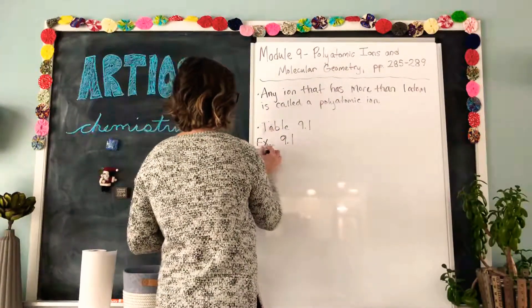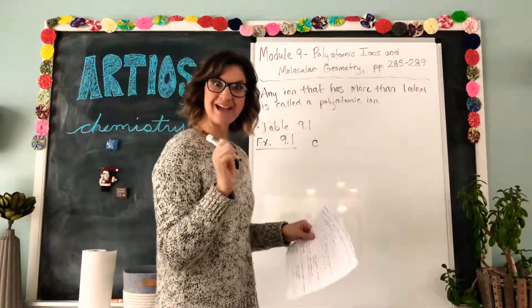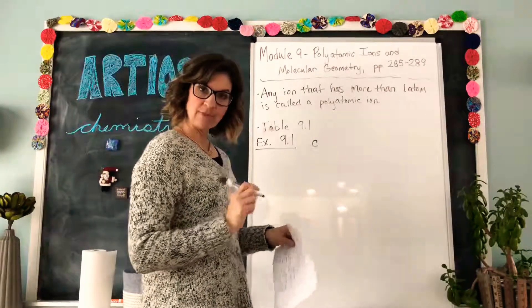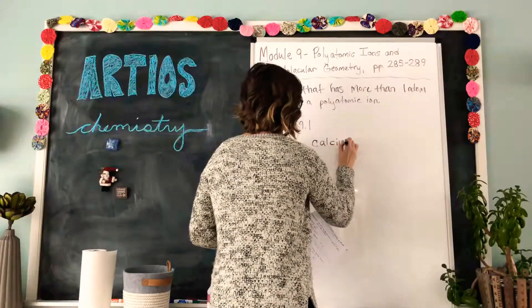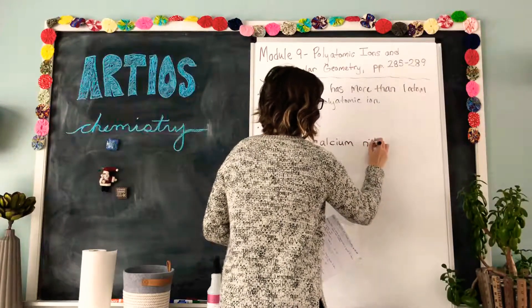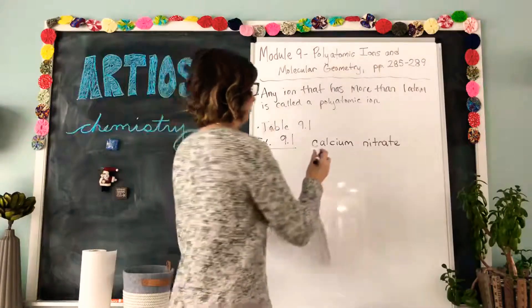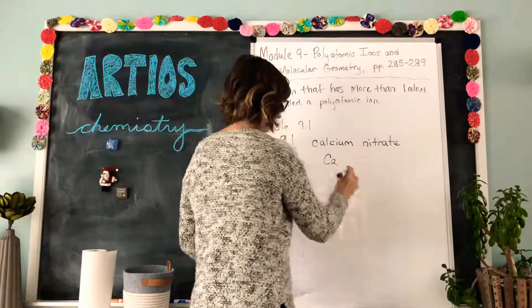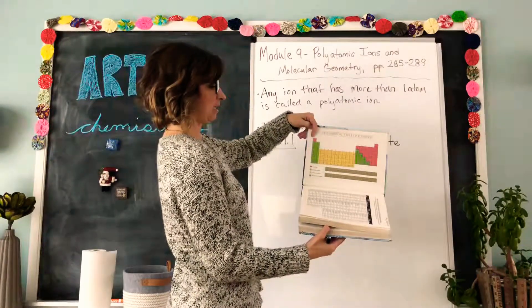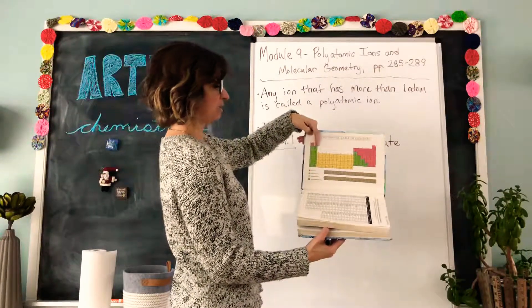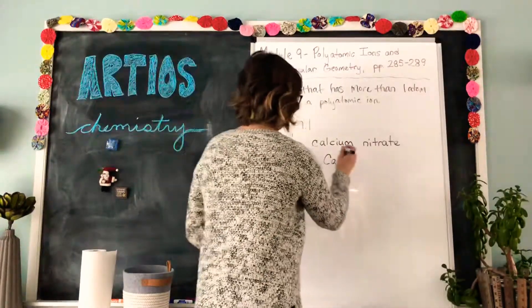Example 9.1 starts with calcium nitrate. And again, we have to write out the chemical formula for it. So calcium we know is Ca. It is in the second column, which means it is, the first column is one plus, the second column is two plus. So calcium is a two plus charge.